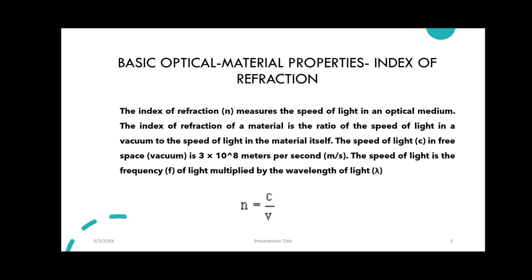Mathematically, refractive index is the ratio of the speed of light in vacuum to the speed of light in the material itself. Vacuum speed is 3×10⁸ meters per second. We divide the ratio of the speed of light in free space — we call it C — by the speed in the material, we call it V.